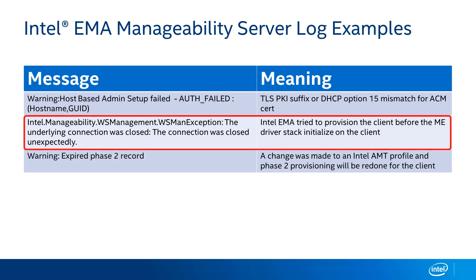Next, you may see a WSMAN exception message: 'The underlying connection was closed — the connection was closed unexpectedly.' This can appear when the Intel EMMA agent tries to start provisioning Active Management Technology before the Intel Management Engine and AMT driver stack have fully initialized in the operating system. It will resolve itself once the driver stack is loaded and the Intel Endpoint Management Assistant agent is able to communicate with and configure AMT.